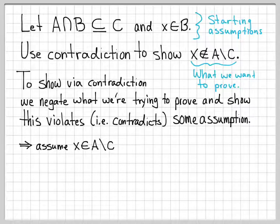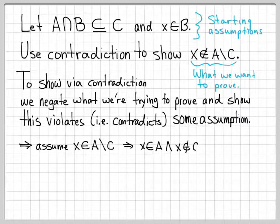So we're going to start off by assuming that X is an element of A difference C. What does that mean? Well, if X is an element of A difference C, that means that X is in A and X is not in C. That's what it means to be in the difference between two sets — you're definitely in A and you're not in C. So we've just written out what it means to be in the difference of these two things.